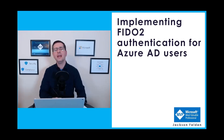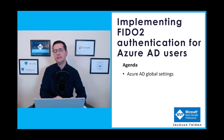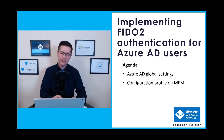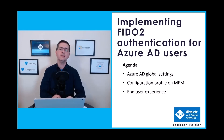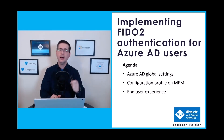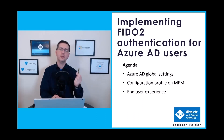Welcome to my implementing FIDO2 authentication for Azure AD users video. In this presentation, I will show three steps in order to have FIDO2 up and running. The first one is a global setting in Azure AD where we enable FIDO2. Step two is going into Microsoft Endpoint Manager to create a profile that will allow users to log on to their devices using a security key. And then I need to show the end user experience: how the end user can register a new key and how they can log on using a FIDO2 key instead of a password.